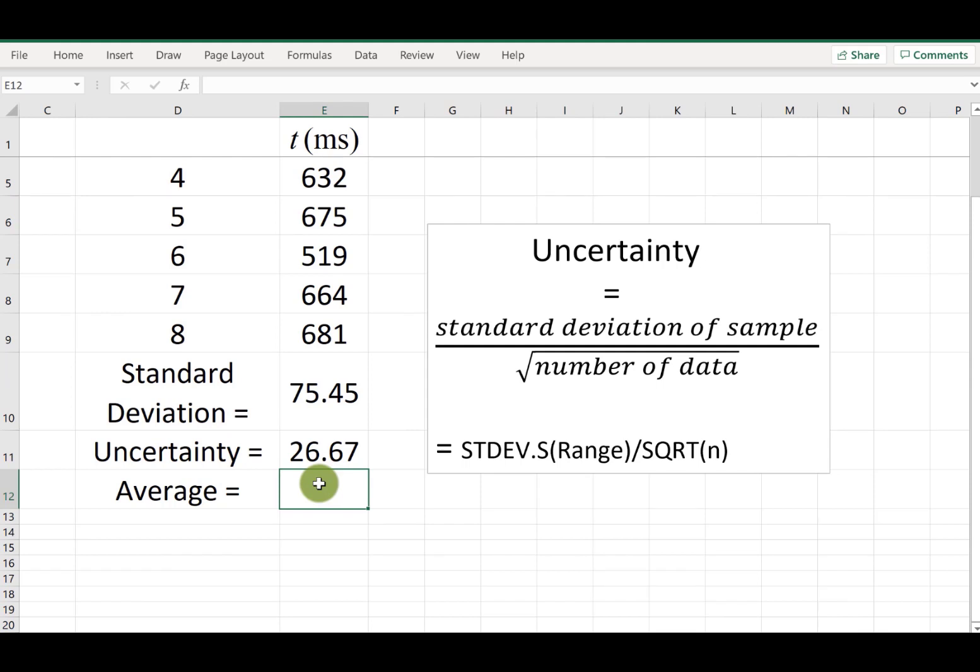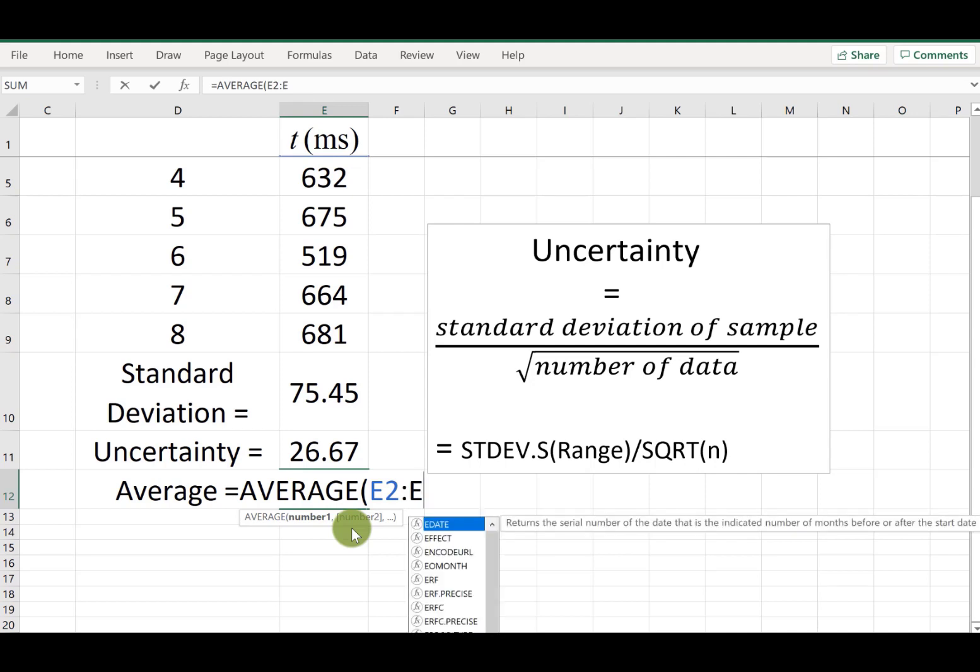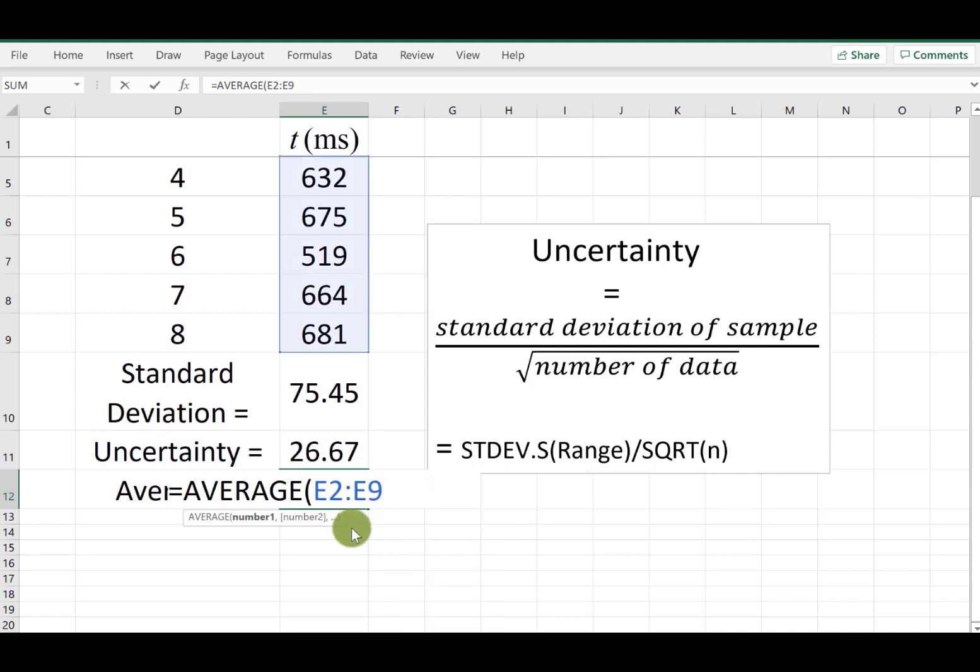Let's also calculate the average of the data because we're going to be using this a lot. I start by typing equal sign, then type average or choose average from the list, and then type the range, this time E2 to E9. Hit the close parenthesis and as you can see the data is highlighted, so we are calculating the average of all this data.